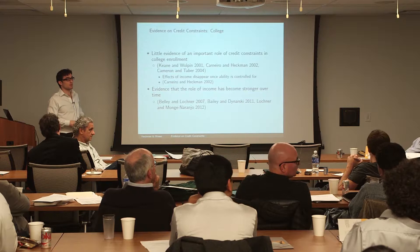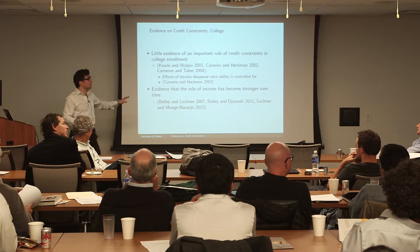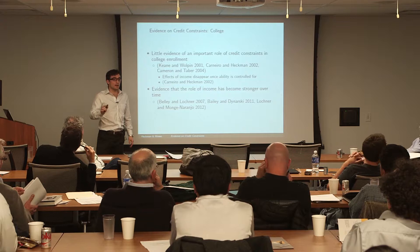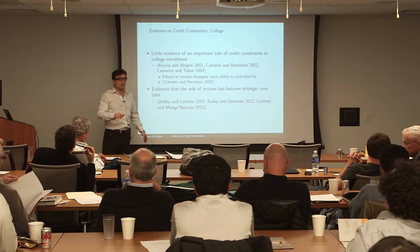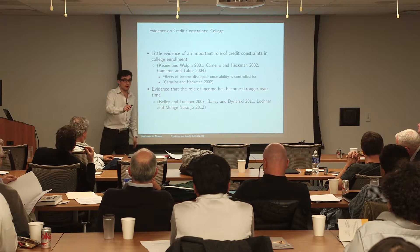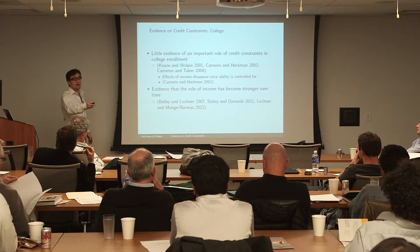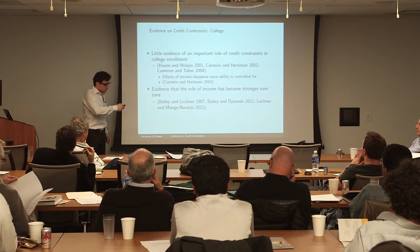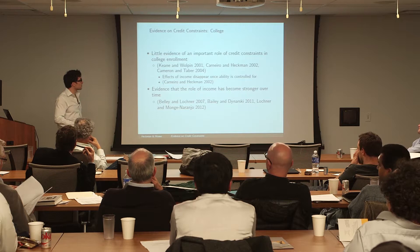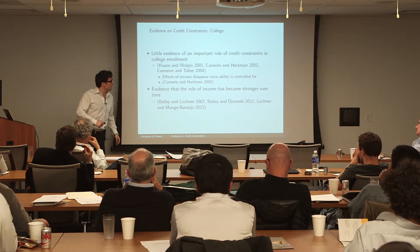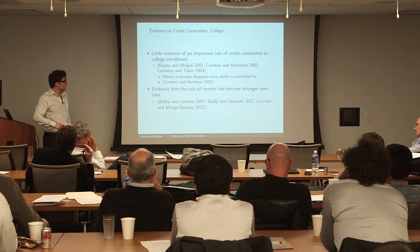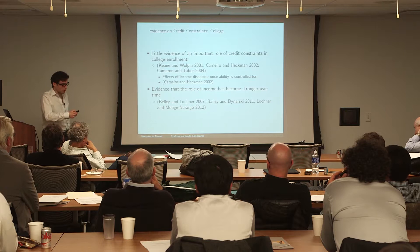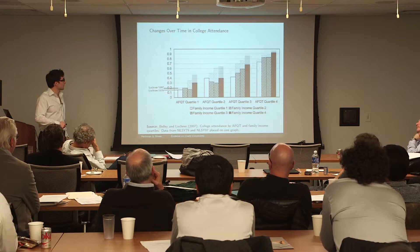What does it mean to find large credit constraints? Who is constrained, and what are the policy implications? I'm not surprised that we can find constrained people, but the question is how much does this matter and does it go in the direction we think it should. What seems to appear is that especially in studies that control for ability, the effect of income becomes at least smaller, if not disappearing. Some work, including by Professor Lochner and co-authors, asks whether the role of income has become stronger over time.